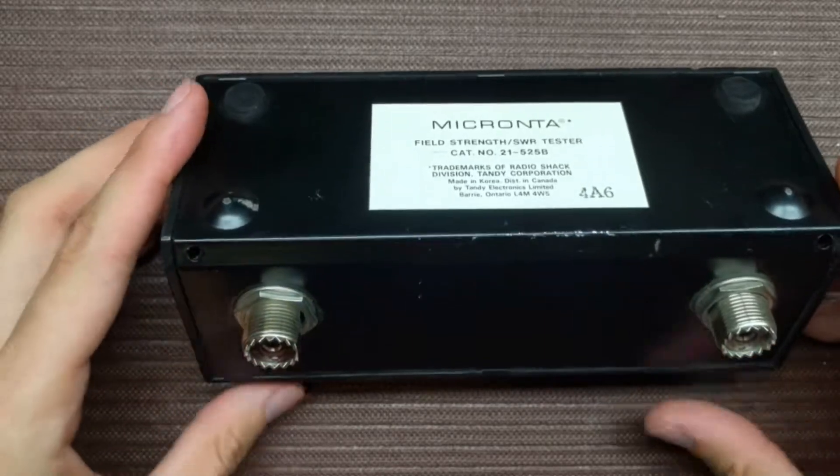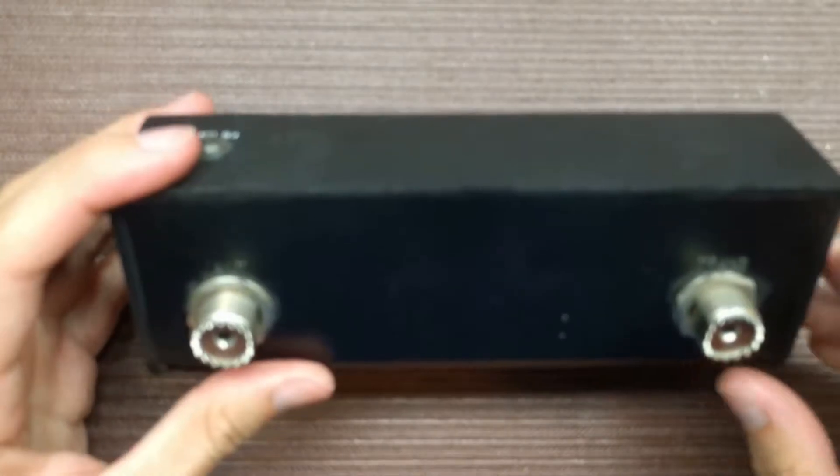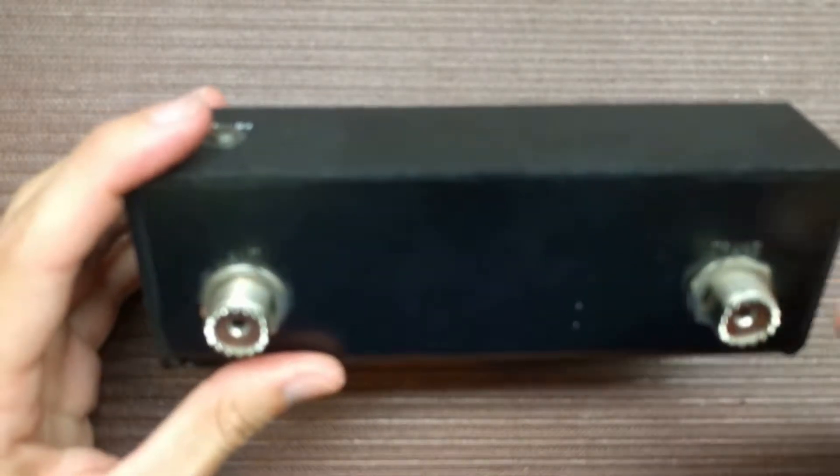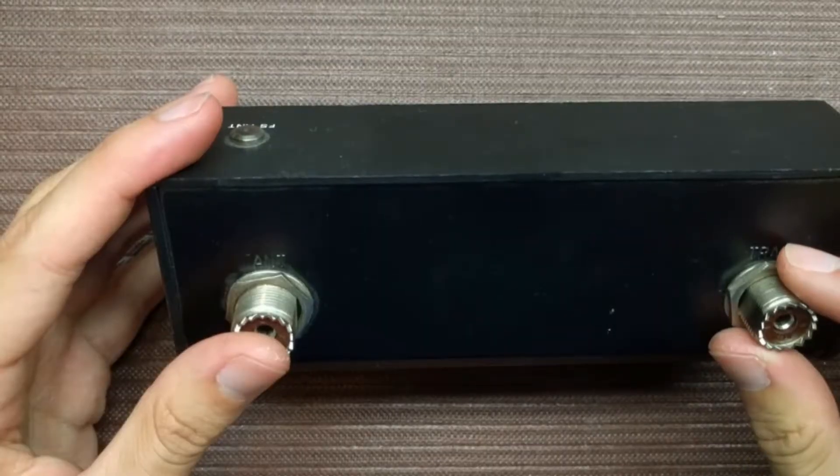Okay so now before we open it up, as you can see on the back it just has two inputs here. We have our transmission input and then our antenna input over on this side. Alright let's open it up.